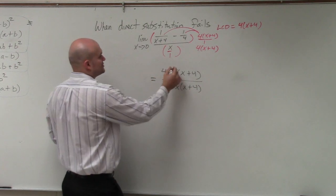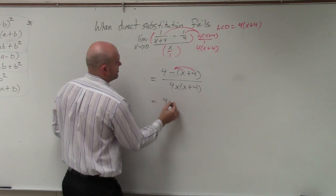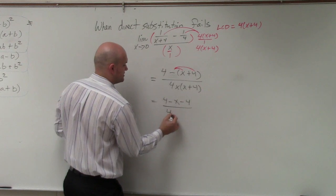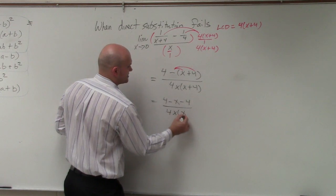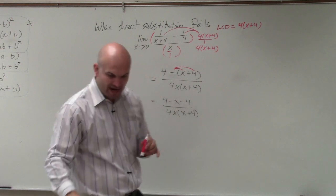All right, now I distribute the negative: 4 minus x minus 4 divided by 4 times x times x plus 4. Again, you could distribute, but let's just leave that distributing out for a second.